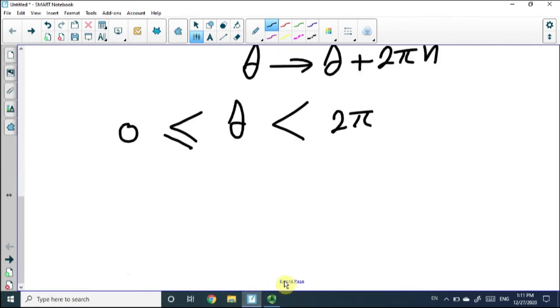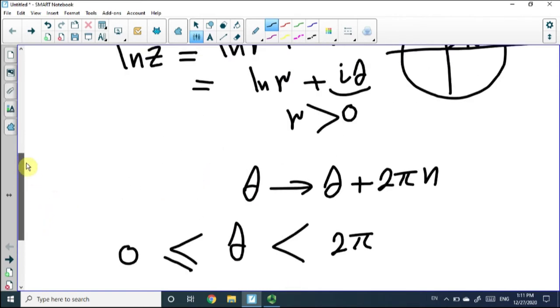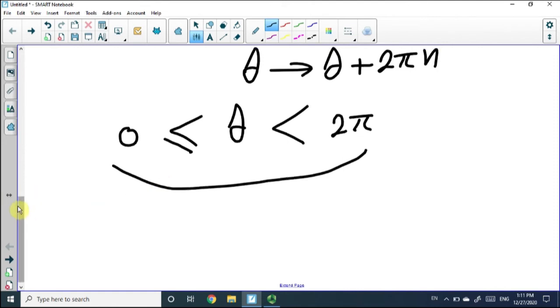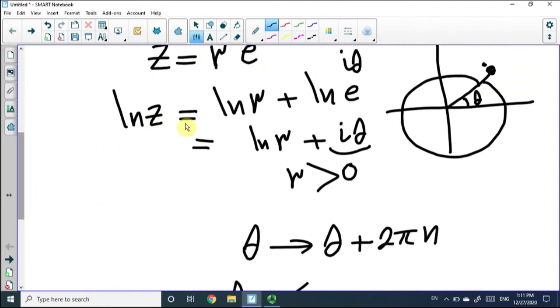If I restrict theta to be greater than or equal to zero, less than two pi, then I will guarantee that the function becomes single-valued. So we solve this problem, the first problem, and they call this the principal value for the logarithmic. If you choose theta in this range, then the logarithm function is called the principal value.